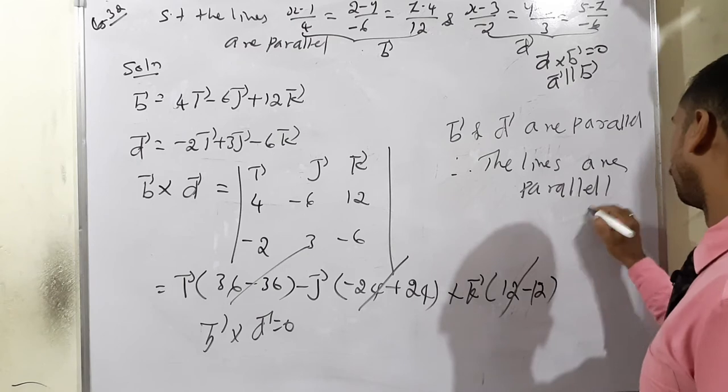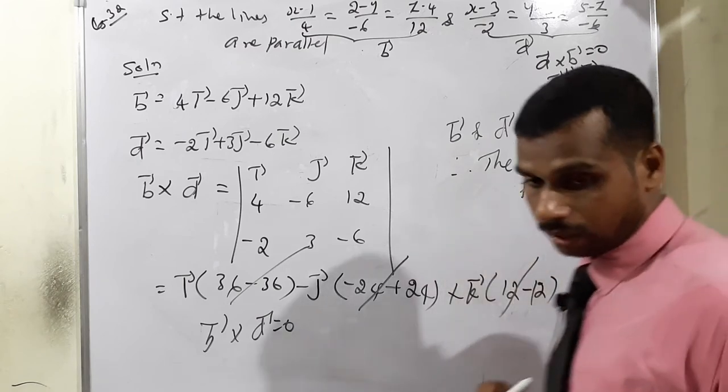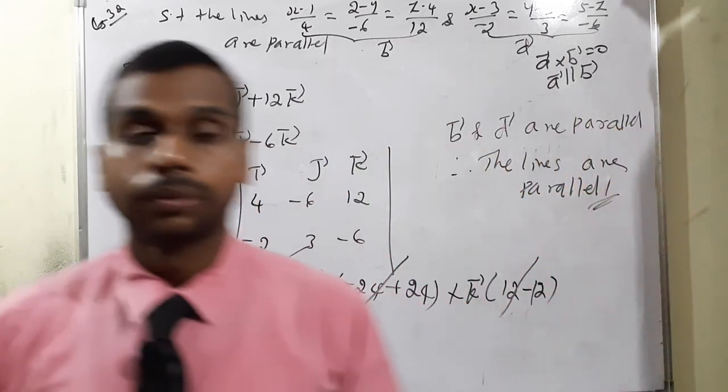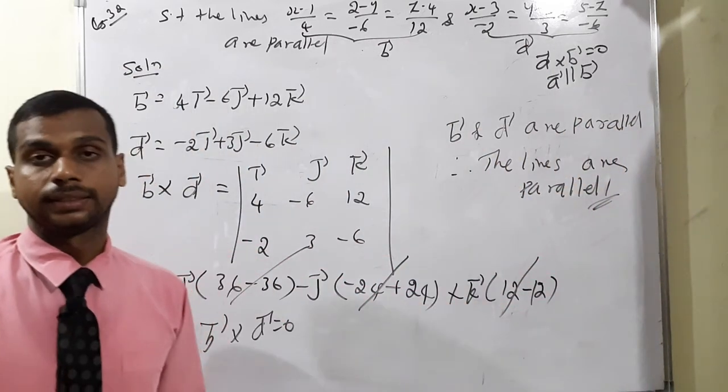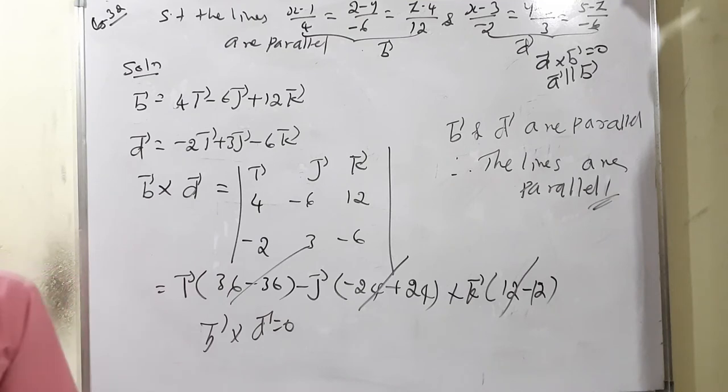Since b vector and d vector are parallel, the lines are also parallel. Hence proved. I will continue to exercise 6.4.